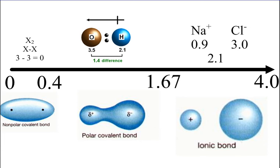If you have a difference in electronegativity greater than 1.67, you form an ionic bond. For example, sodium chloride: sodium has an electronegativity of 0.9 and chlorine has 3.0, giving a difference of 2.1. These form an ionic bond.